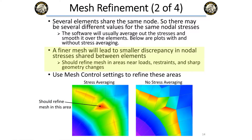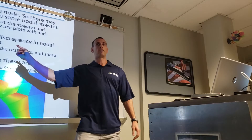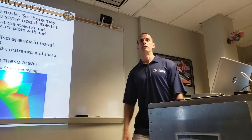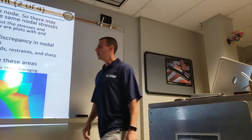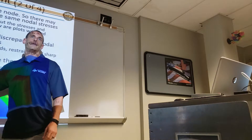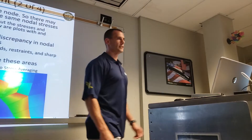A finer mesh leads to fewer discrepancies between elements arguing over what the nodal stress should be. This definitely happens at locations where you apply loads, where you apply restraints, and at any sharp corners. You can use mesh control to refine those specific areas — rather than making your entire mesh three times denser, you can pick the geometry in that region and tell it to have a higher density mesh there.